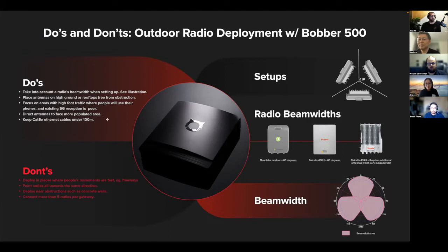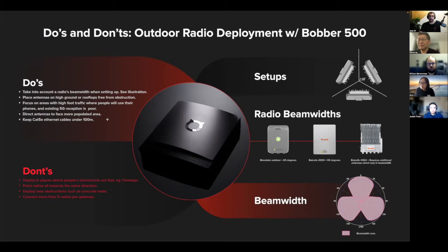You'll also want slow-moving objects — connected devices. Having it over a freeway might have a lot of traffic but those devices won't be usable. The best places are coffee shops, bus stops, gyms, and similar locations. Note that 5G reception can't easily go through walls and concrete, so you may have obstructions. Don't deploy in places with freeways and try not to point all your radios in one direction.